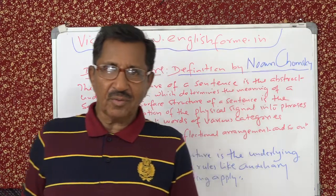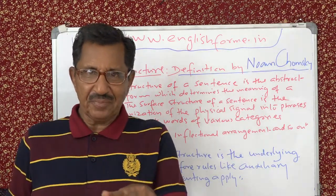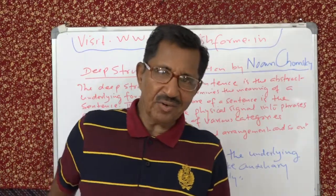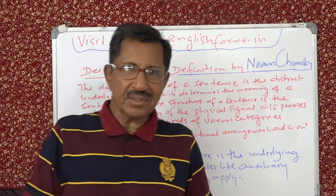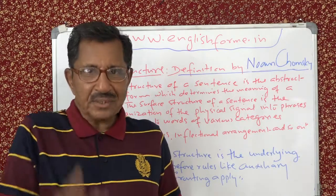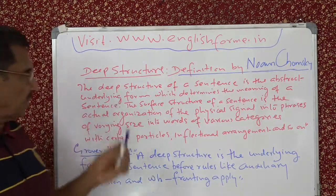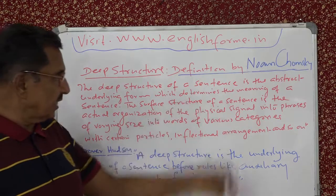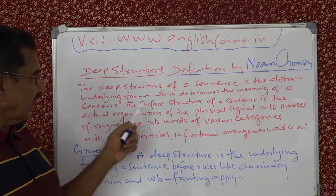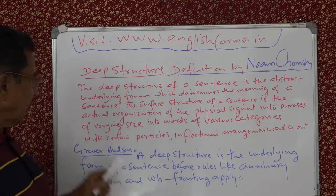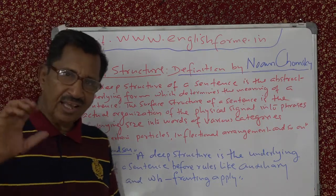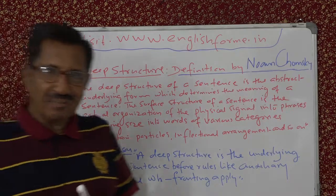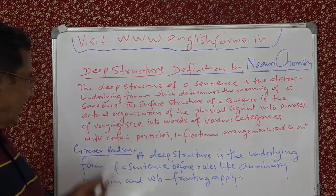In the third lecture, we were talking about two structures of the same sentence — deep structure and surface structure. Now we have further information about deep structure from Chomsky himself. The definition given by him is: the deep structure of a sentence is the abstract underlying form which determines the meaning of the sentence. So the deep structure gives the meaning — the semantic content.